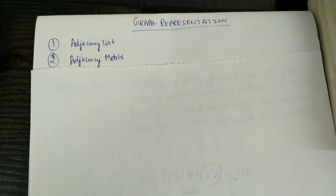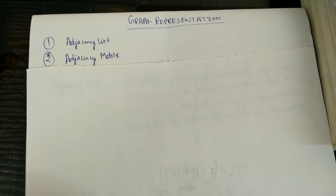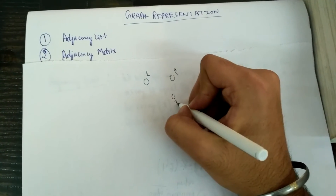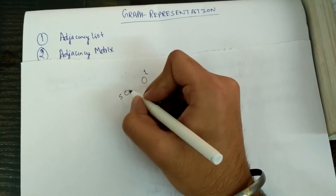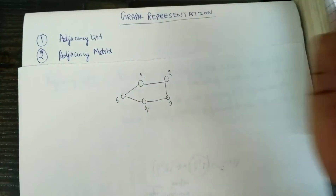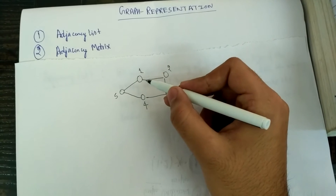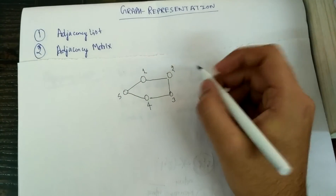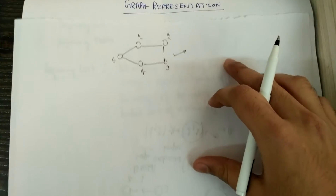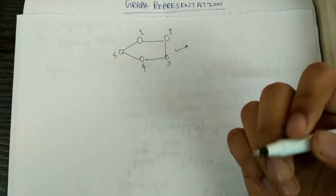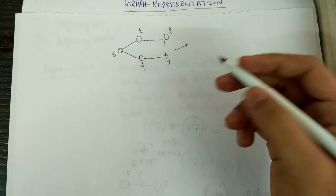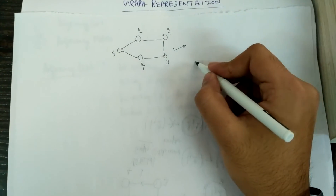To represent a graph using an adjacency list, let's say we have a graph with 5 vertices and this graph is an undirected one — we are allowed to go anywhere through the edges, so going from 1 to 2 also means we can go from 2 to 1. What we will do is create an array of linked lists, where the size of the array equals the number of vertices. Since we have 5 vertices, our array size would be 5.